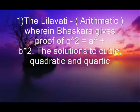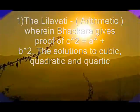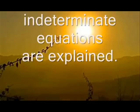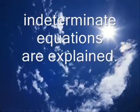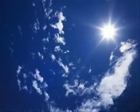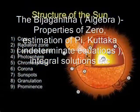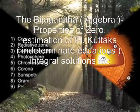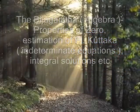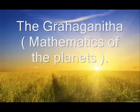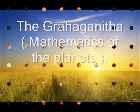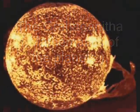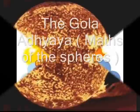The planetary models of ancient Indian mathematical astronomy are described in several texts. These texts invariably give algorithms for computing mean and true longitudes of the planets, but are completely devoid of any material that would inform us of the origin of the models. One way to approach the problem is to compare the predictions of the Indian models with the predictions from other models that do have, at least in part, a known historical background.